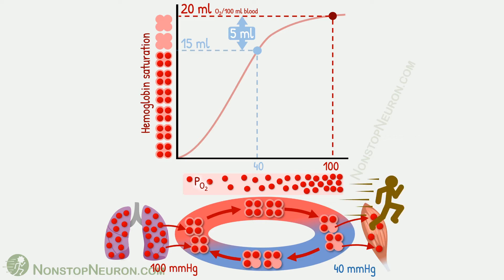During exercise, oxygen demand is increased. There are two changes in the hemoglobin dissociation curve that help deliver more oxygen in this situation. First, due to increased work, oxygen consumption is increased, so partial pressure of oxygen falls at exercising tissue. In extreme cases, it can fall as low as 15 mmHg.